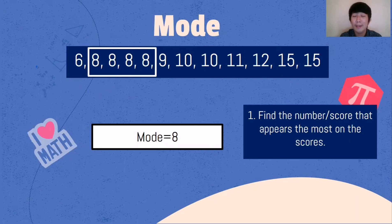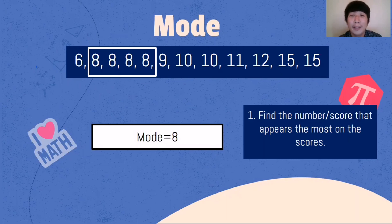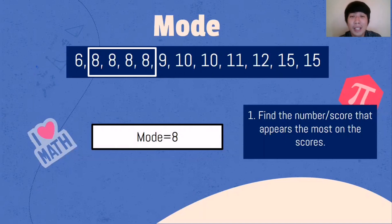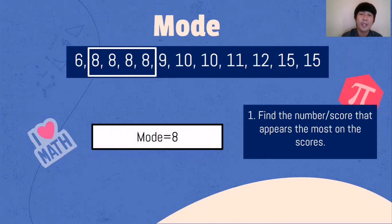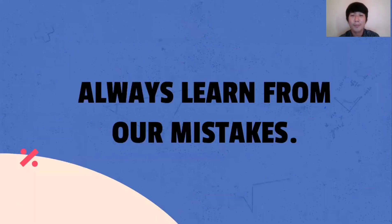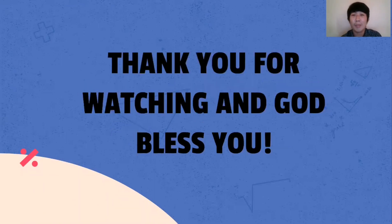Let's review. Mean is the average of the scores — add all the scores divided by the total number of scores. Median is the middle most score — if odd, find the single middle score; if even, find the two middle most scores, add them, and divide by 2. For mode, find the number that appears the most. I hope you learned something today. Always learn from our mistakes. Thank you for watching, God bless you, God loves you always — keep on subscribing to my YouTube channel. Have a nice day everyone!